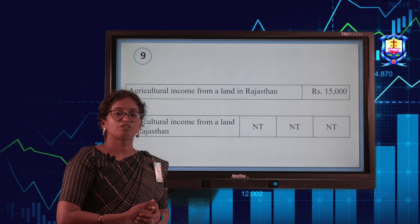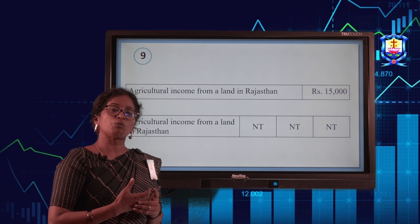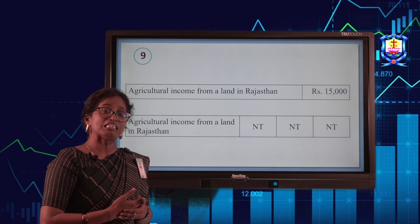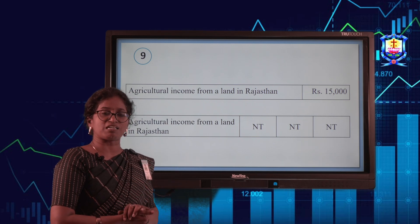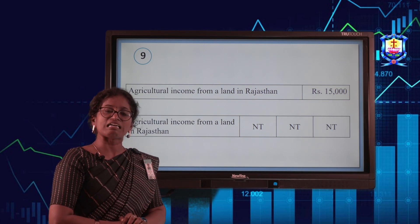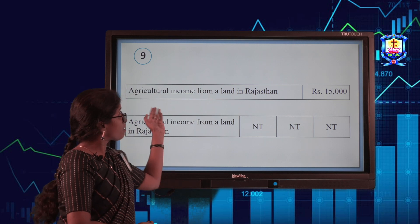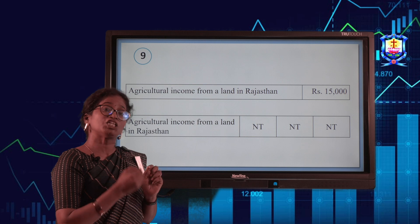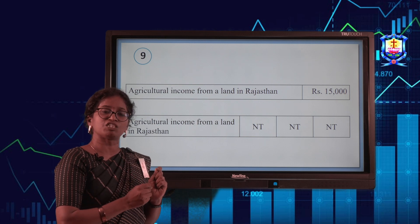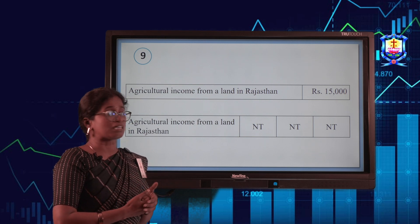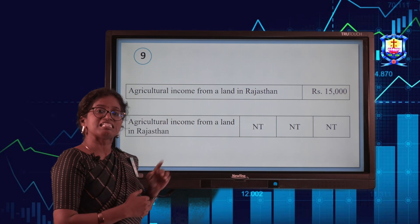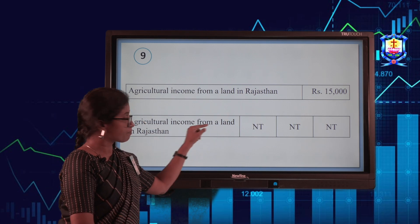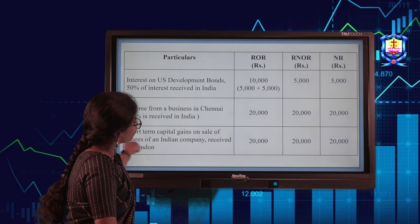Agricultural income from land in Rajasthan. We need to be very careful while calculating the scope of total income — if any exempted income appears, it is exempted for all kinds of taxpayers. Agricultural income from India is exempted from tax. If agricultural income were from some other country, it would be taxable. But since this is Indian agricultural income, it is exempted income and not taxable for any taxpayer.